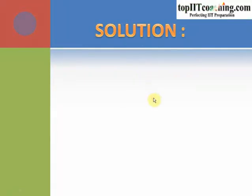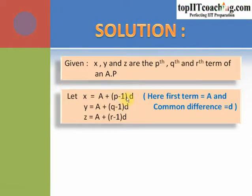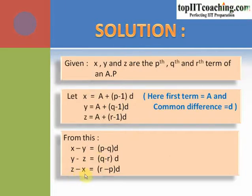Since X, Y and Z are the Pth, Qth and Rth terms of an AP with first term A and common difference D, we write: X = A + (P−1)D, Y = A + (Q−1)D, Z = A + (R−1)D. Subtracting these equations gives: X − Y = (P−Q)D, Y − Z = (Q−R)D, and Z − X = (R−P)D.